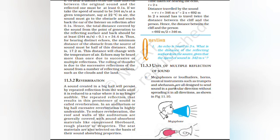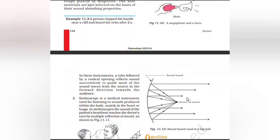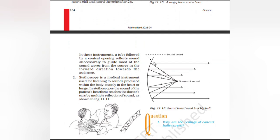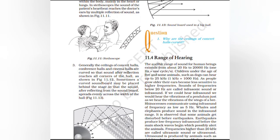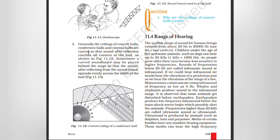Uses of multiple reflection of sound: Megaphones, loud hailers, horns, musical instruments such as trumpets, and ear trumpets are all designed to send sound in a particular direction without spreading into all directions. In these instruments, a tube followed by a conical opening reflects sound successively to guide most of the sound waves from the source in a forward direction towards the audience. A stethoscope is a medical instrument used for listening to sounds produced within the body, mainly in the heart or lungs. In a stethoscope, the sound of the patient's heartbeat reaches the doctor's ear by multiple reflection of sound. Generally, the ceilings of concert halls, conference halls, and cinema halls are curved so that sound, after reflection, reaches all corners of the hall. Sometimes a curved soundboard may be placed behind the stage so that the sound after reflecting spreads evenly across the width of the hall.